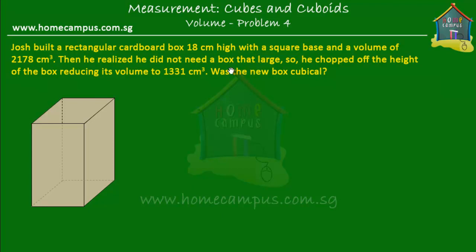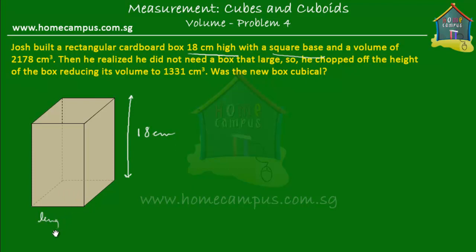What are the things given to us? We know that originally the height of the box was 18 centimeters — from here to here was 18 centimeters. Next, it had a square base. The base is made of the length and the breadth, and the rectangle at the bottom is the base. Since this base is a square, the length was equal to the breadth. So we already know that the length is equal to the breadth.